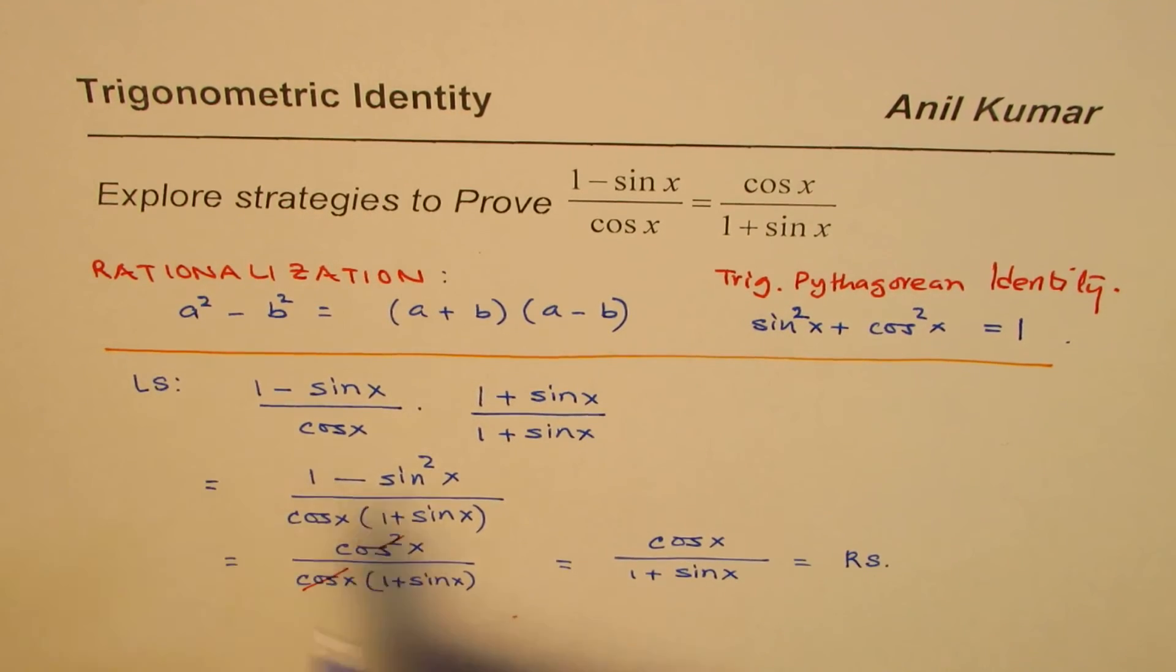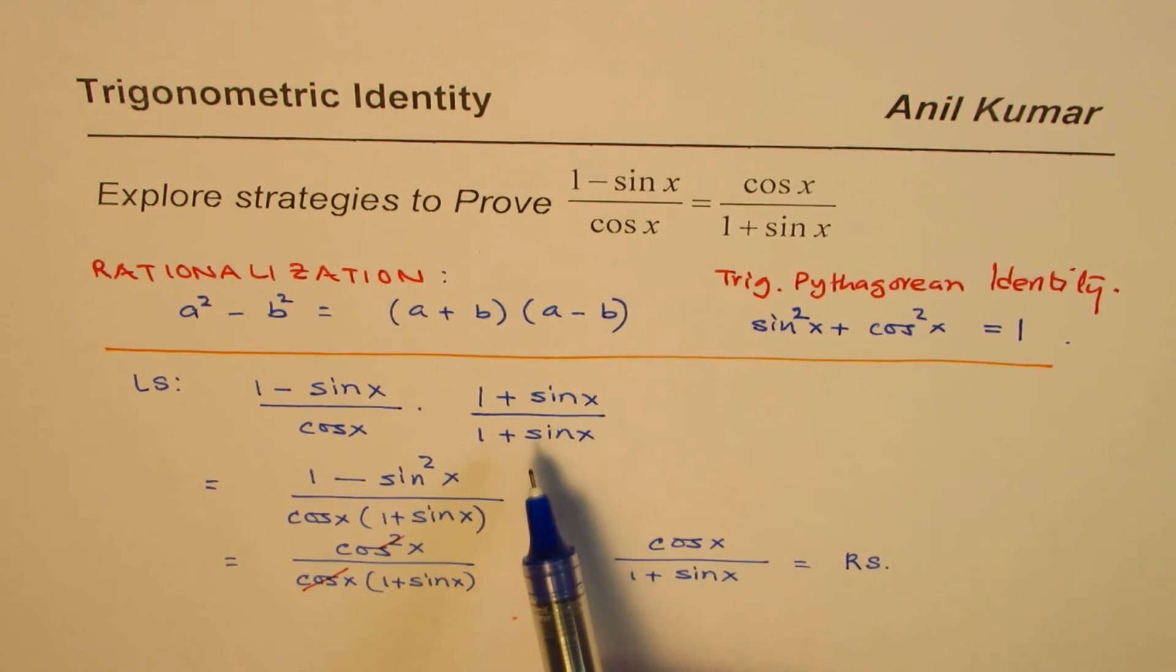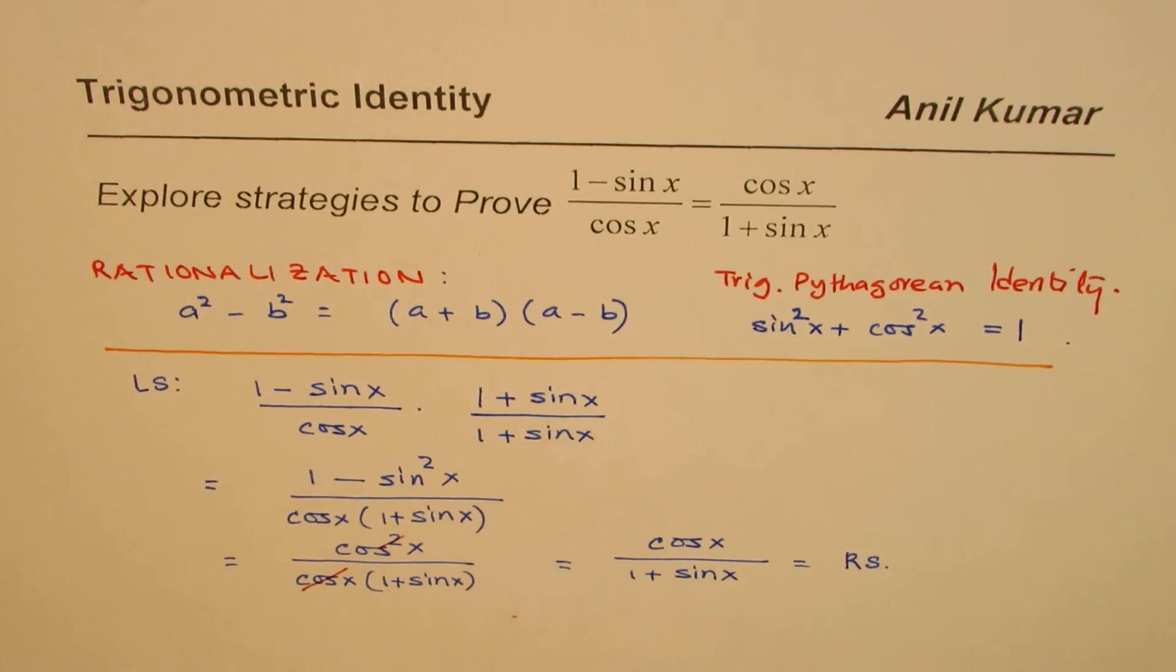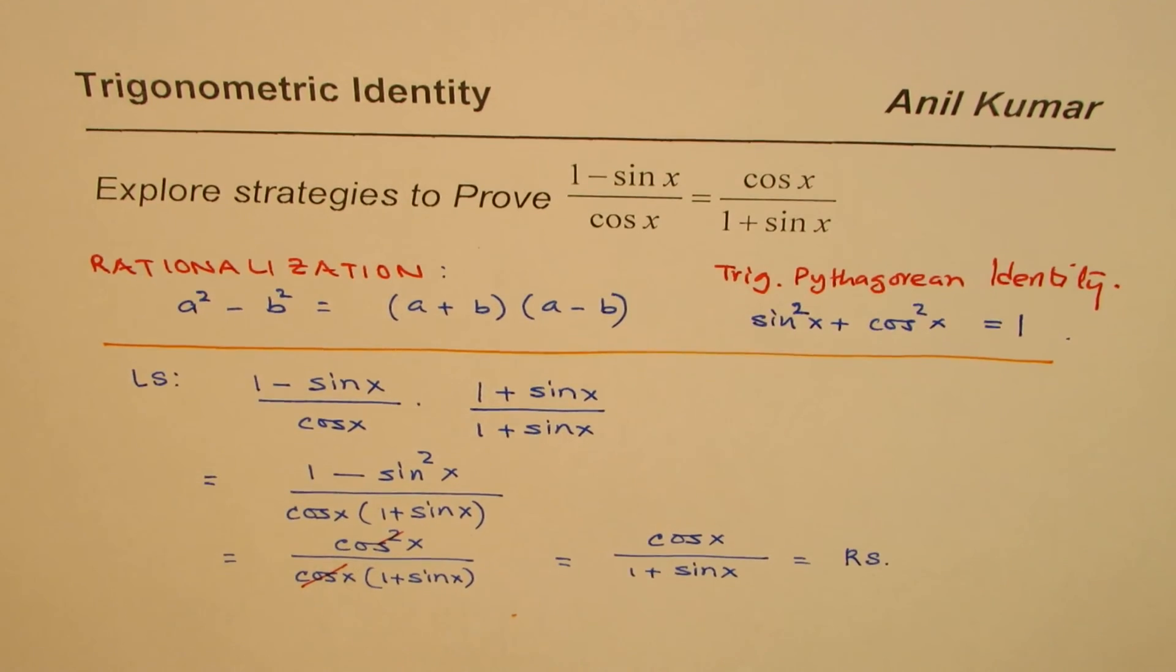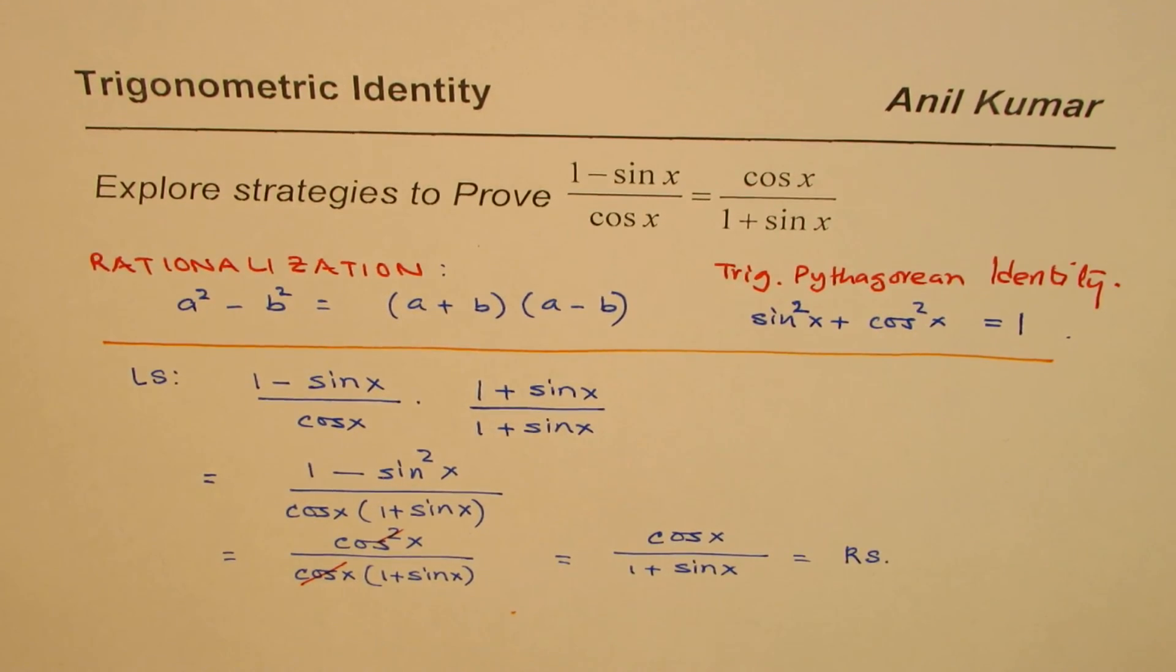So we have proven that left side equals right side. And a very simple, effective strategy is to rationalize. So that is how you can do some questions related to trigonometric identities. I'm Anil Kumar, and I hope that helps. Thank you and all the best.